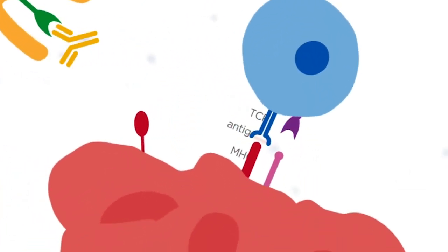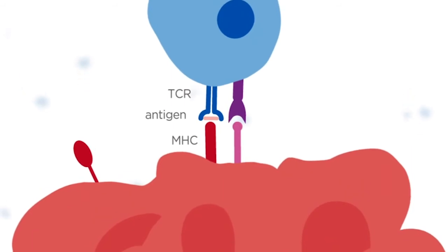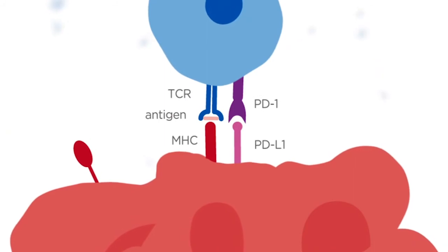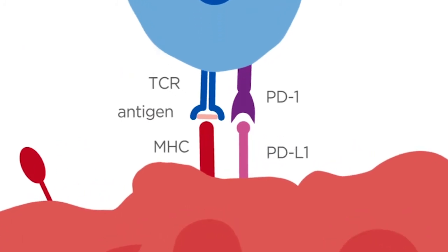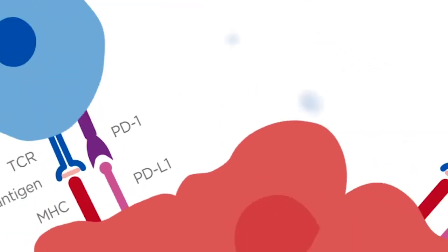In addition to CD47, tumour cells also express other proteins, such as PD-L1, which binds to the PD-1 receptor on T-cells and suppresses their tumour killing functions, putting a brake on the anti-tumour immune response.